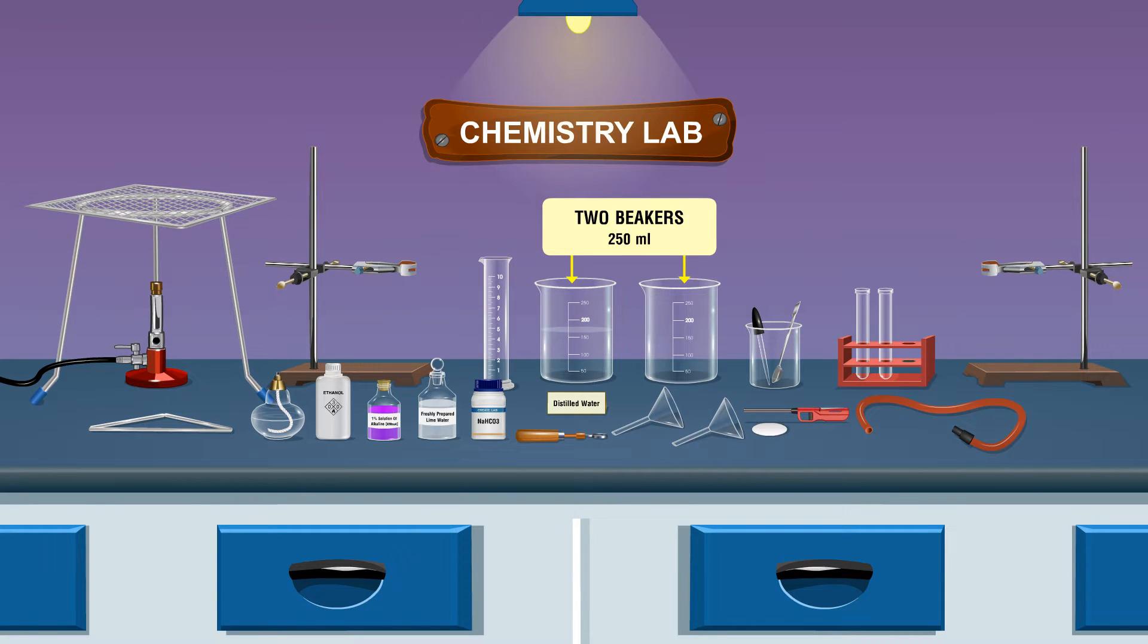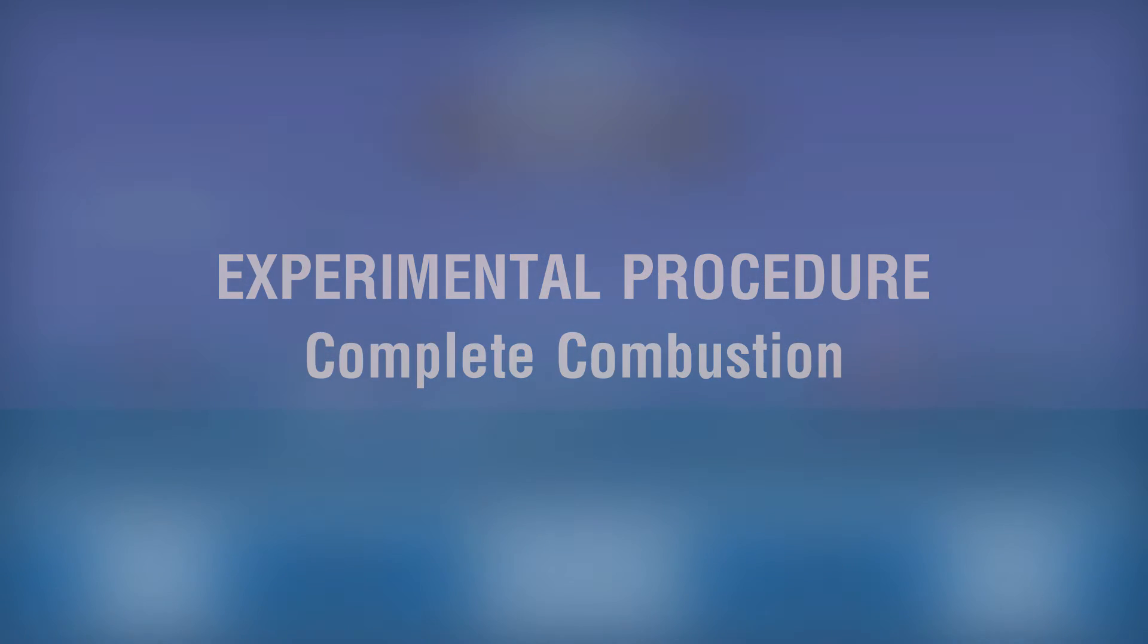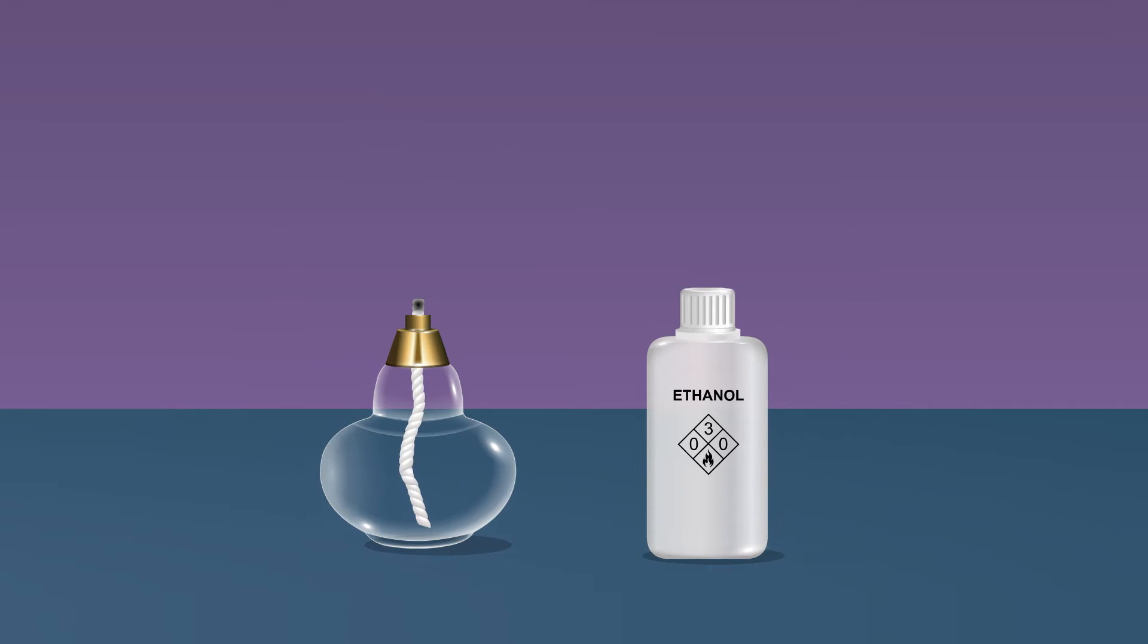Two beakers 250 ml, one containing distilled water, rubber tubing, jet, two funnels, spatula, burner, two tripod stands, boiling tube holder, lighter, clamp for holding funnel, dropper, and filter paper. Experimental procedure: complete combustion - take ethanol as fuel in a spirit lamp.